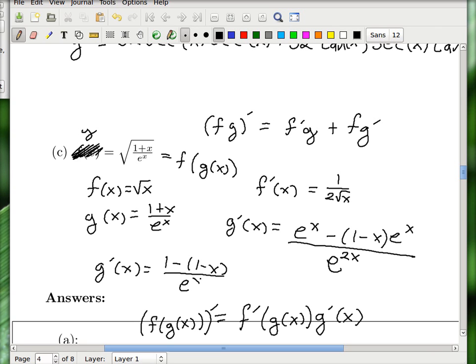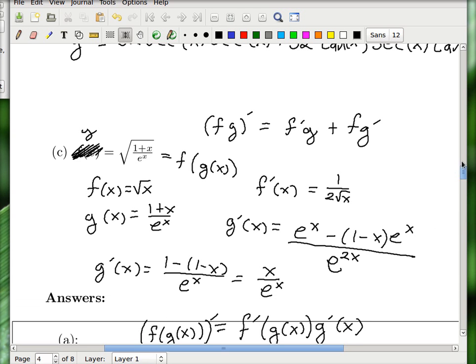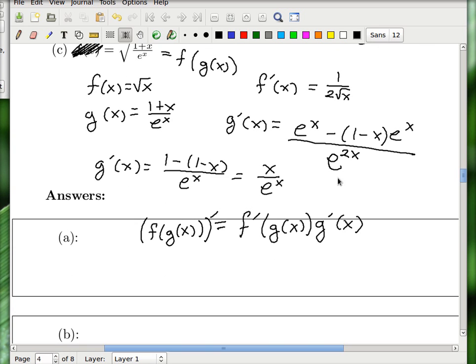And you can cancel some e to the x's. And I feel the urge to do it. I feel a strong urge to cancel e to the x. And so what happens? That gives me 1 minus 1 minus x over e to the x. Oh my god, it's getting very simple. And notice that 1 minus 1 is 0. And so this is just x over e to the x. I can't believe that worked out so nicely.